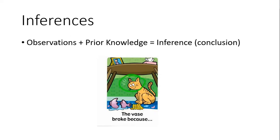Okay, so this picture, think about your prior knowledge about cats and vases that are broken. And there's a table there. So what kind of inference could you make about that cat and the vase?